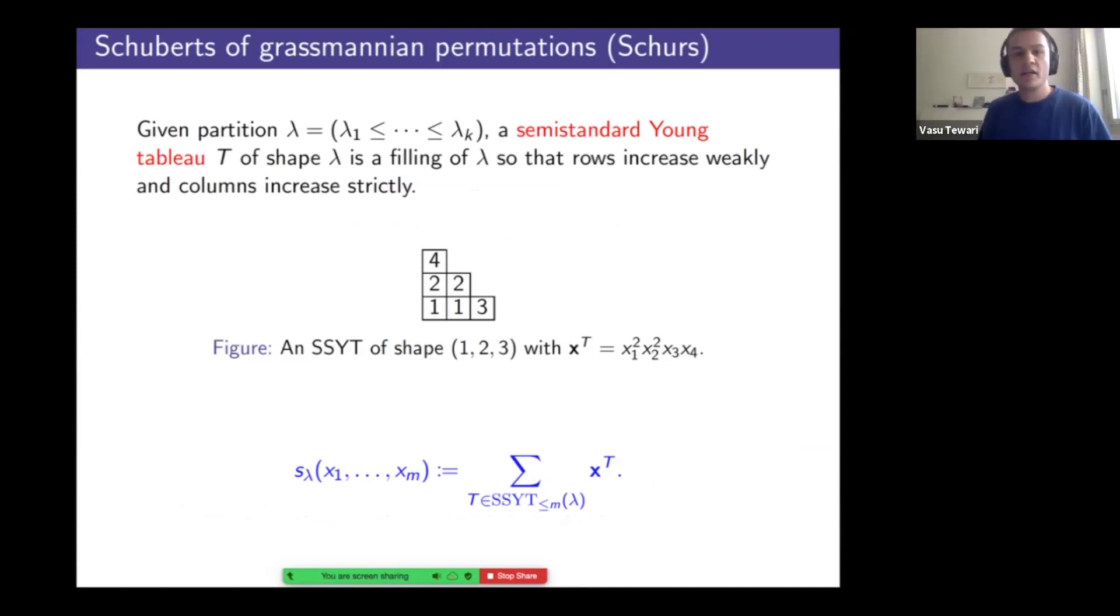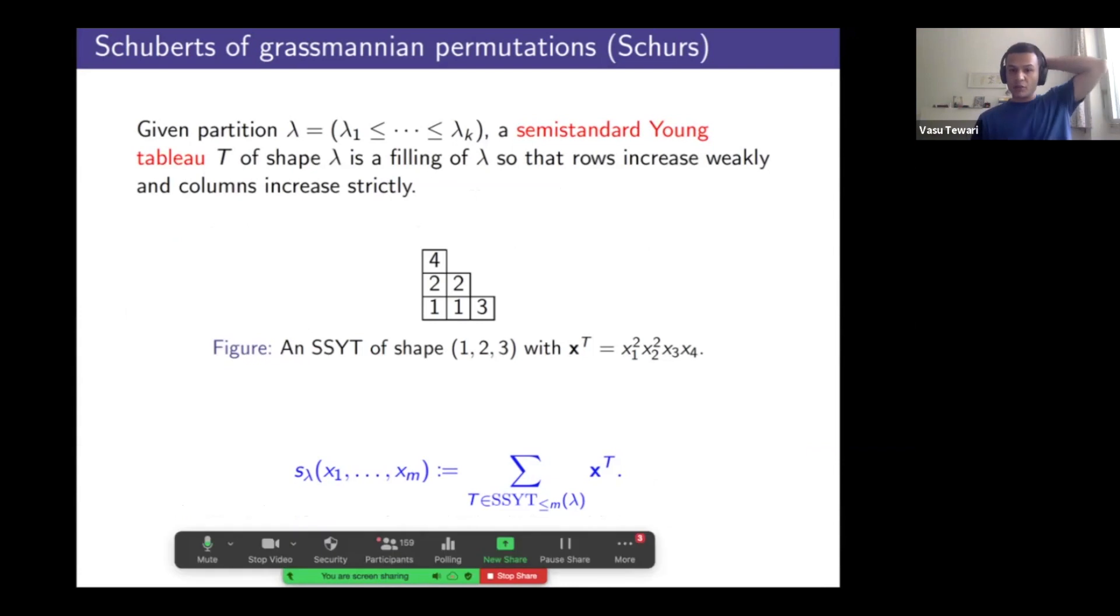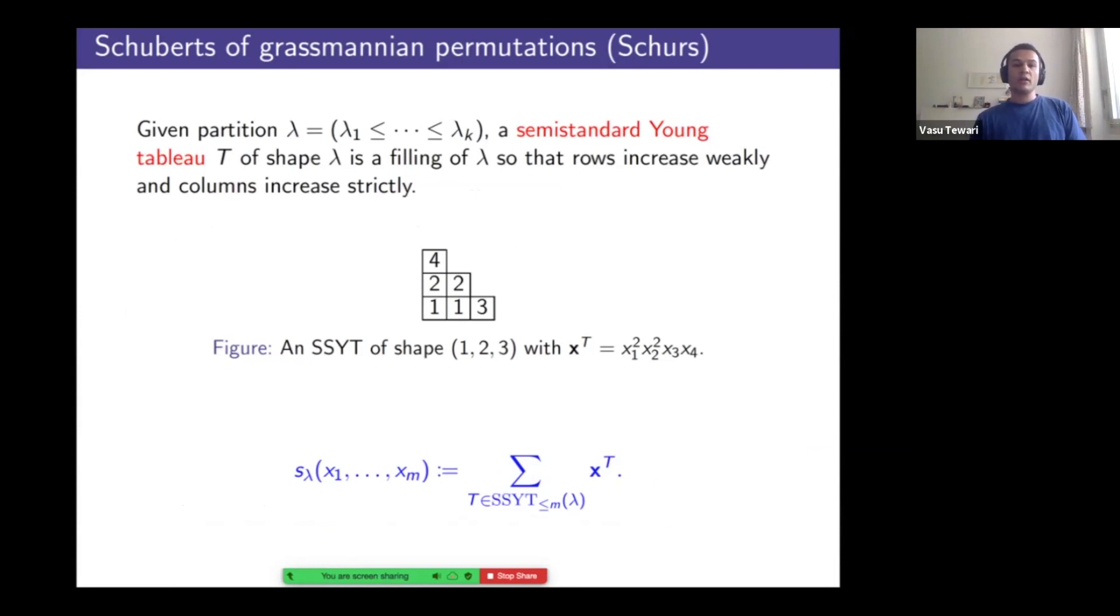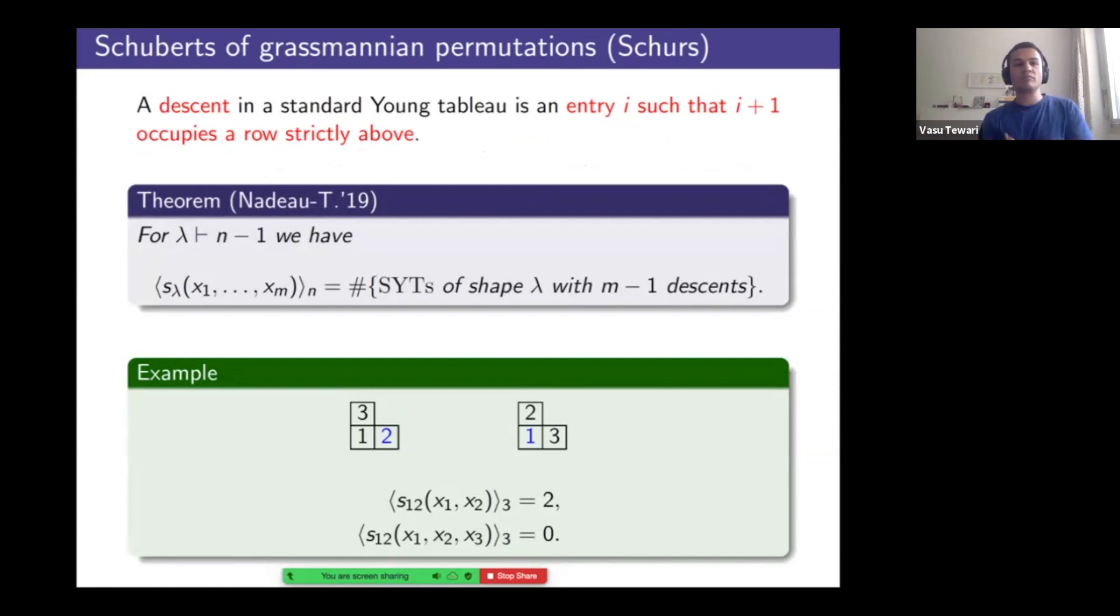Okay. So this was a bit too easy. So let's up the stakes a bit and deal with the divided symmetrization of Schubert's attached to Grassmannian permutations, otherwise known as Schur polynomials. So recall that a Grassmannian permutation is a permutation with at most one descent. And that descent determines how many variables you put in your Schur polynomial. So Schur polynomials recall are obtained by attaching monomials to semi-standard Young tableau. And the subscript here means if I have m variables, then the maximal entry is m. So now we're going to discuss the divided symmetrization of these polynomials, and here's where tableau descents come into play.